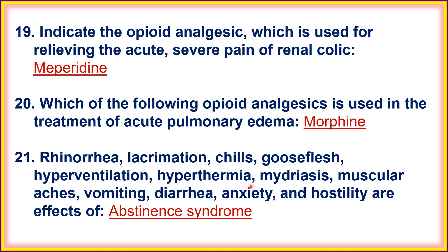Twenty-first, rhinorrhea, lacrimation, chills, yawning, hyperventilation, hyperthermia, mydriasis, muscular cramps, vomiting, diarrhea, anxiety, and hostility are the effects of abstinence syndrome — meaning withdrawal syndrome. When we are taking morphine continuously and suddenly stop administration, then the withdrawal symptoms will come. These withdrawal symptoms are also known as abstinence syndrome.